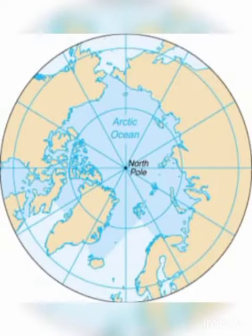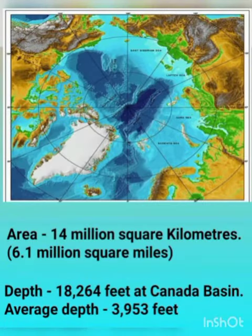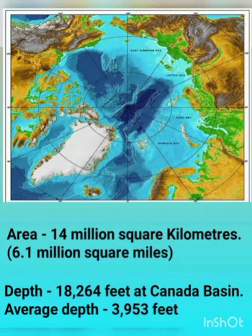It is located at the polar region of the Northern Hemisphere. With an area of about 14 million square kilometers, it is about 1.5 times as big as the United States. It is 10 times smaller than the Pacific Ocean. The average depth of the Arctic Ocean is 3,953 feet.